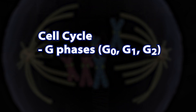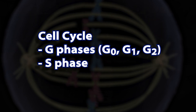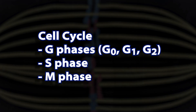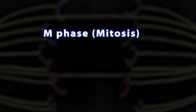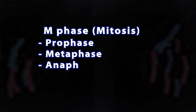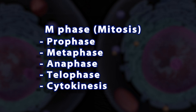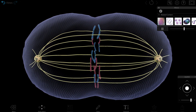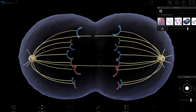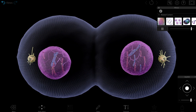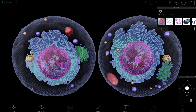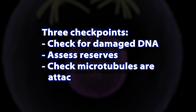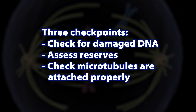The cell cycle is split into G phases, where the cell grows and gathers supplies, an S phase, where it synthesizes a copy of its DNA, and an M phase, where the cell divides. That M phase is mitosis, which is divided into prophase, metaphase, anaphase, telophase, and cytokinesis. During prophase, the DNA is condensed. During metaphase, it's lined up down the middle. During anaphase, it's divided in half. During telophase and cytokinesis, these halves are surrounded by membrane to create two distinct identical cells. There are three checkpoints that make sure that cell division doesn't happen unless everything is ready for the next step.